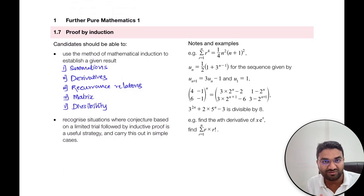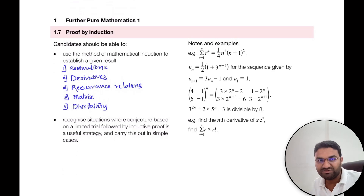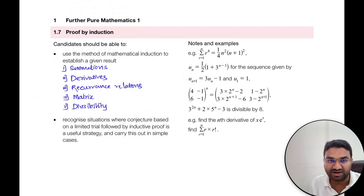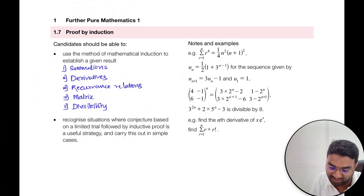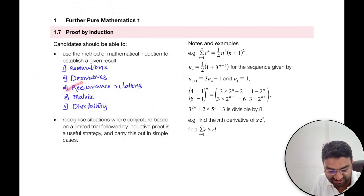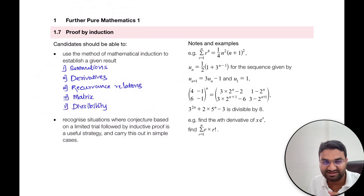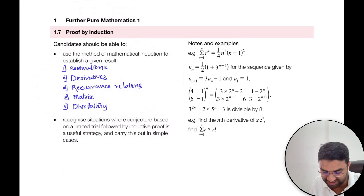The last part of paper one is proof by induction. In proof by induction, we have five subtopics: proof by induction for summation, then derivatives, recurrence relations, matrices, and divisibility tests. Those are the five topics we need to understand.